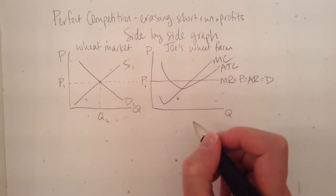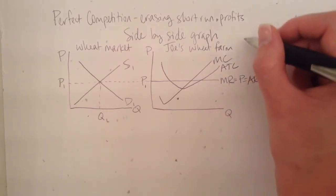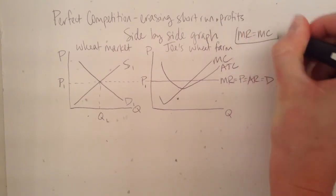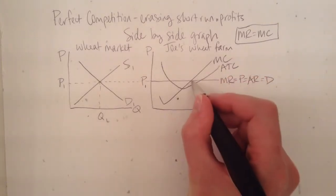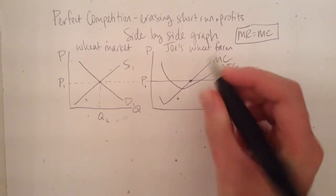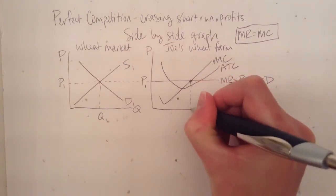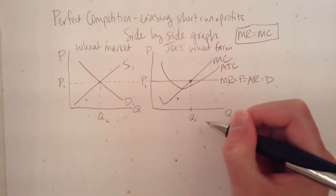The quantity that Joe will produce is determined by using the profit maximization rule, where marginal revenue equals marginal cost. Always remember that rule, because no matter the market structure, that is where profit will be maximized. So marginal cost and marginal revenue intersect right here. So this is Joe's short-run quantity.